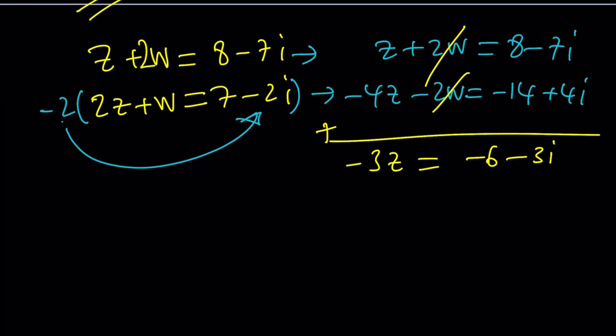Negative 3z gives us negative 6 minus 3i. If you divide by negative 3, z equals 2 plus i.